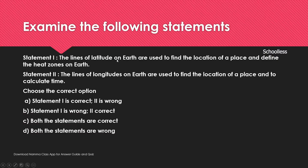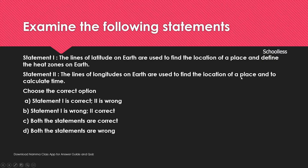Statement 1: The lines of latitude on Earth are used to find the location of a place and define the heat zones — torrid, temperate, and frigid zones. That is correct. Statement 2: The lines of longitude on Earth are used to find the location of a place and to calculate time, including the prime meridian, Greenwich Meridian, and date line. That statement is also correct. Both statements are correct.